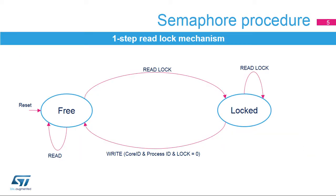In the one-step read-lock procedure, a free semaphore will be locked by reading the semaphore's read-lock register. The core ID used during the read will be stored in the semaphore during the read cycle. When the semaphore's core ID value read by the CPU matches the one from the CPU and the process ID equals 0x0000, the semaphore is locked by the CPU. In the one-step read-lock procedure, there is no process ID; the process ID when locked will read 0x0000. If the core ID doesn't match, or the process ID is different from 0x0000, the semaphore has been locked by another CPU or process.